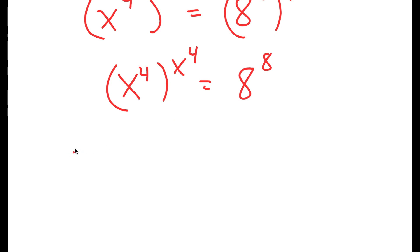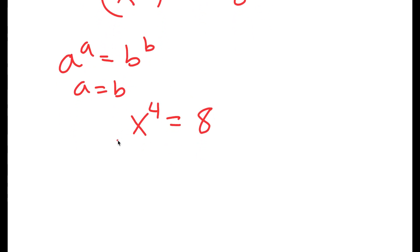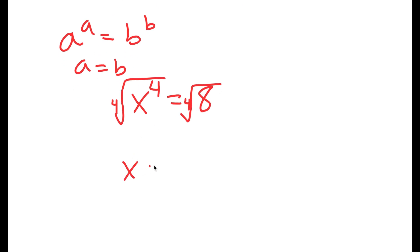Now, if I have something in the form a to the power of a equals b to the power of b, this means that a equals b. So in this case, x to the power of 4 is equal to 8. And to solve for x, I'm going to take the 4th root on both sides. So I get x is equal to the positive or negative 4th root of 8.